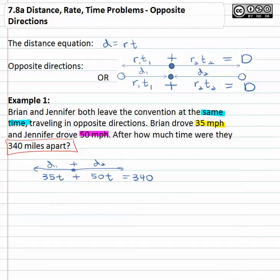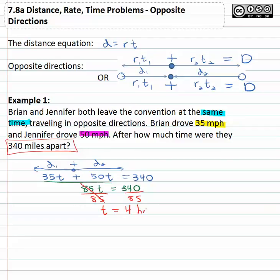We now have an equation we can solve. Combining like terms, 35t plus 50t is 85t, which equals 340. Dividing both sides by 85, we get t equals four. So after four hours, they are three hundred forty miles apart.